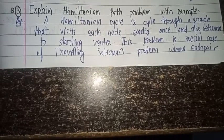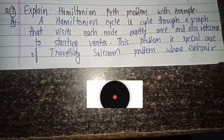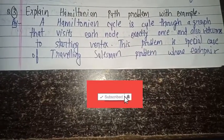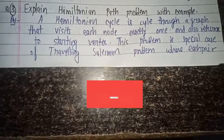Welcome back to the TOC series. Today I am going to talk about the Hamiltonian path problem. A Hamiltonian cycle is a cycle through a graph that visits each node exactly once and also returns.